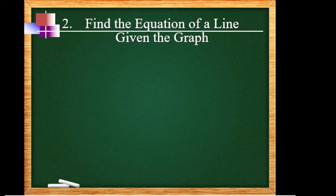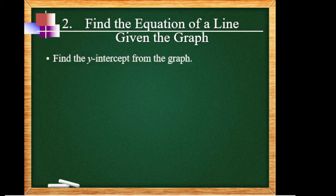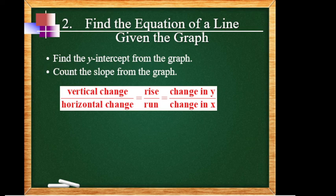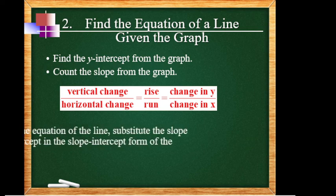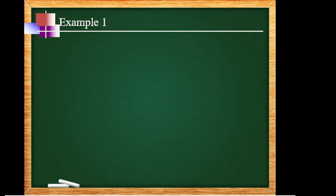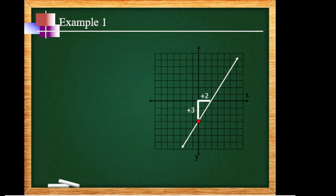Number 2: find equations of a line given the graph. Find the y-intercept from the graph — check where the graph crosses the y-axis. Then count the slope using rise over run, which is change in y over change in x. Then write the equation by substituting the slope and intercept into slope-intercept form. For the example, the graph crosses the y-axis below zero, so it's negative. Counting: 1, 2, 3 — so b is negative 3.